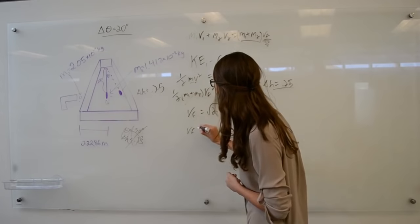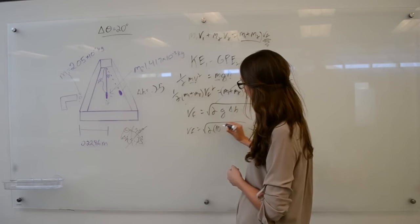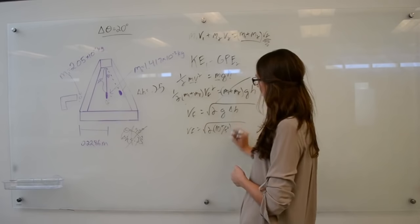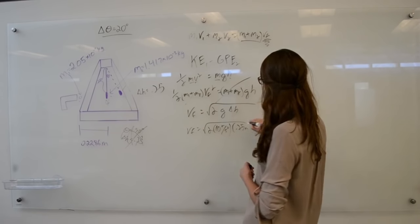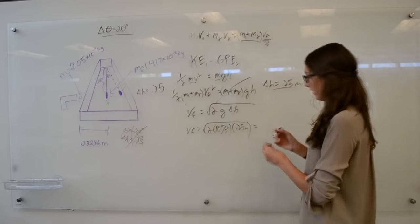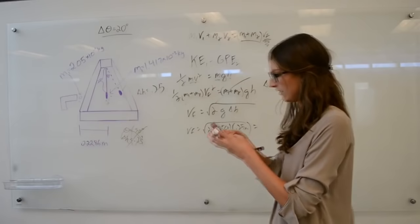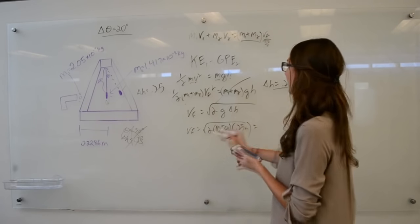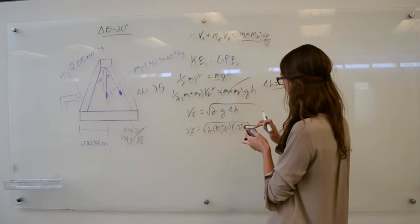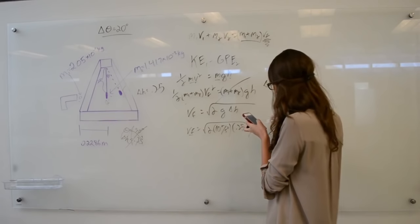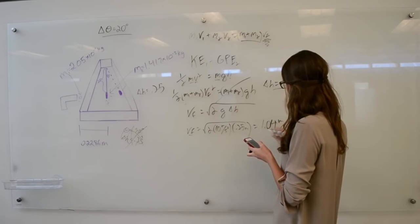We have VF is equal to the square root of 2 times 10 meters per second squared times 0.25 meters. If you do that calculation, we find that the final velocity of both the masses together is equal to 1.04 meters per second.